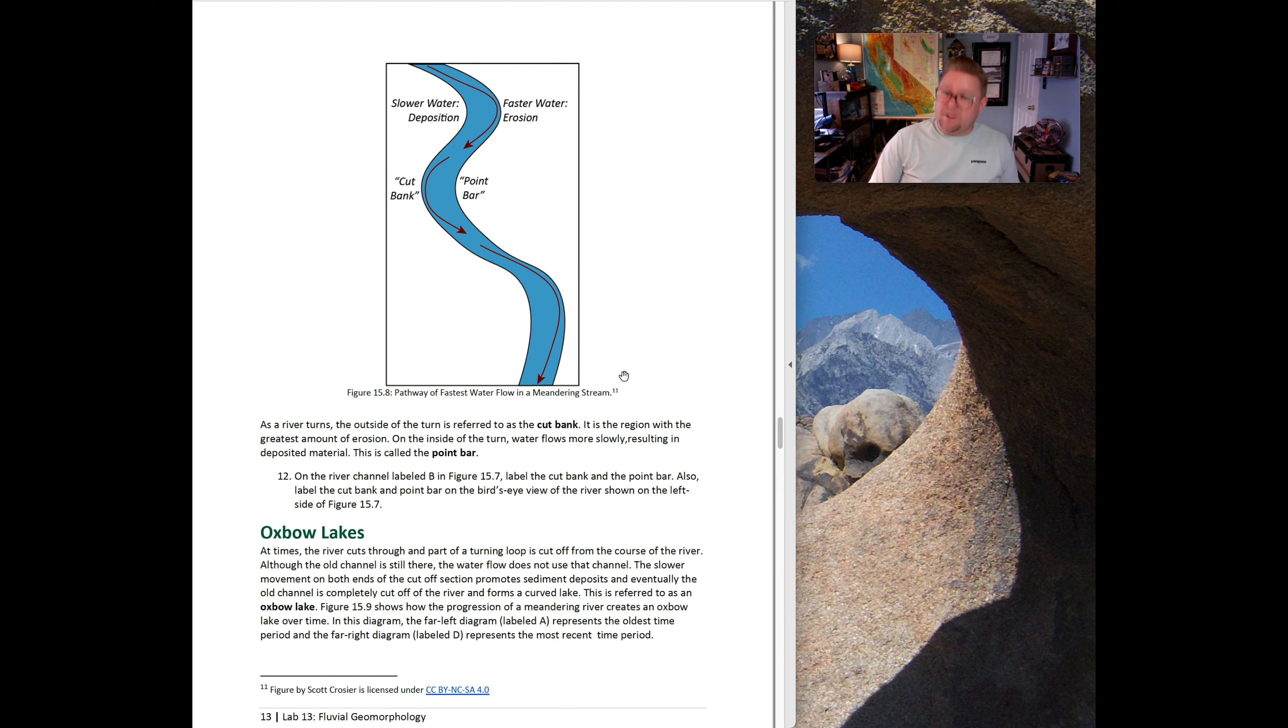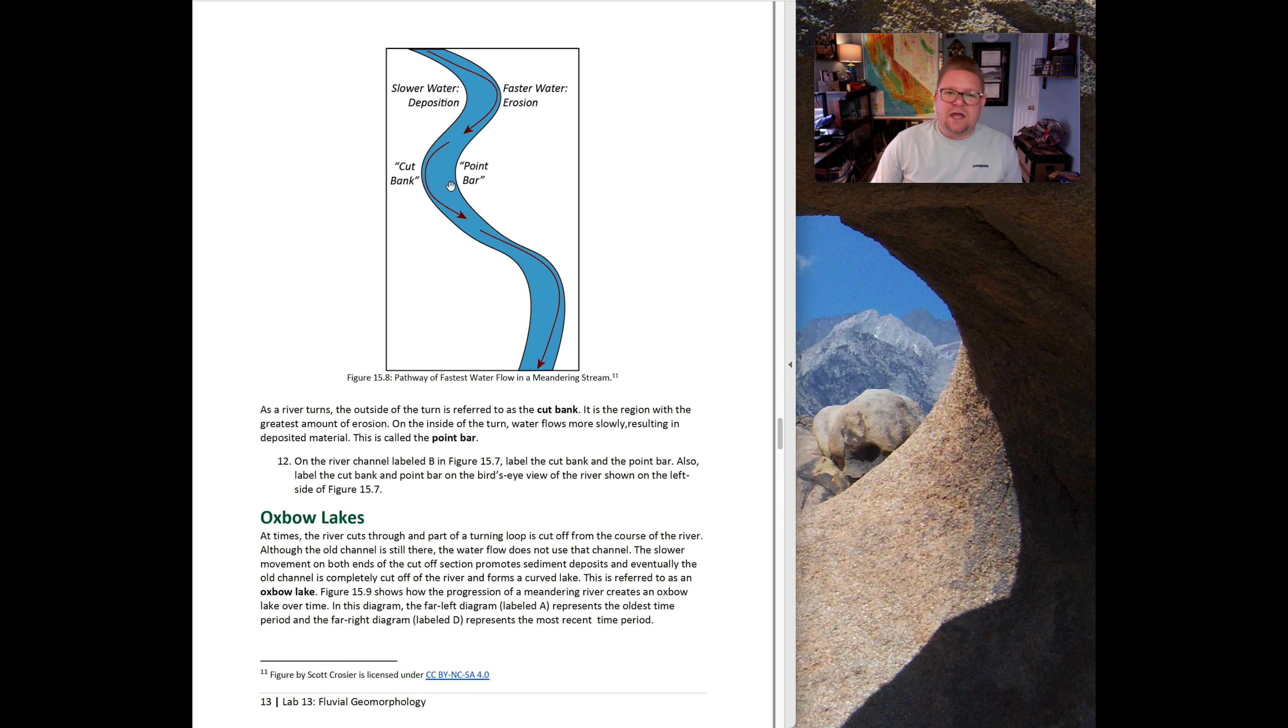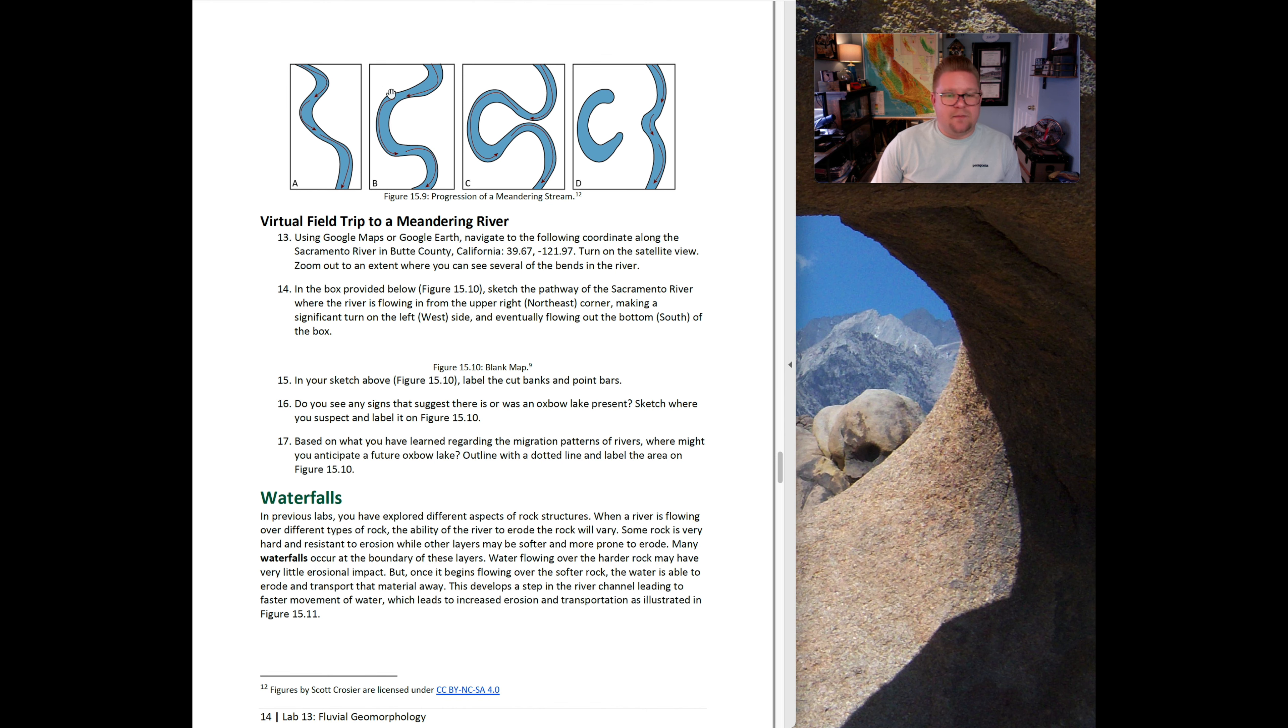One of the features that can be developed from that is called an oxbow lake. At times, the river cuts through, and part of a turning loop becomes cut off from the rest of the course. Maybe at some point, the river will shoot through, S-H-O-O-T through this location, abandoning this part of the channel. If it has water in it, we'll call that an oxbow lake. If it becomes dry, we can call it an oxbow or a meander scar itself. Here, the same diagram we're looking at, that much richer, deeper curve, nice big bellowing. And then all of a sudden there's a chute that occurs, water finds the path of least resistance and travel, cuts through, and abandons that channel and the river itself.